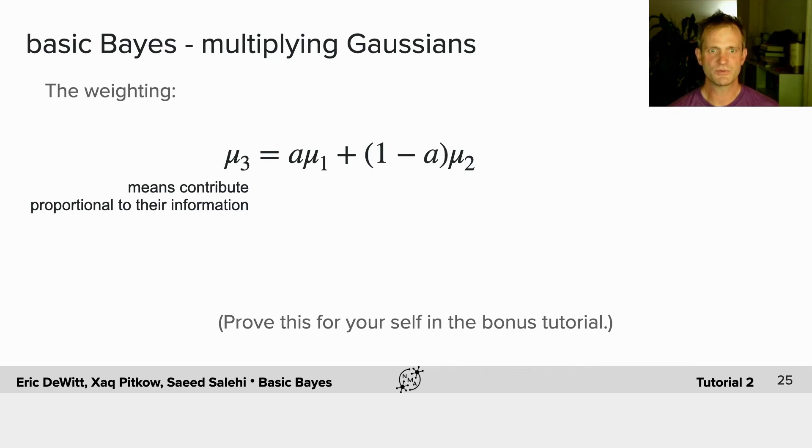So when you multiply two Gaussians, there's an interesting property. The means are going to contribute proportionally to their information. So if I combine two Gaussians, I'm going to weight them with some weighting, here a.